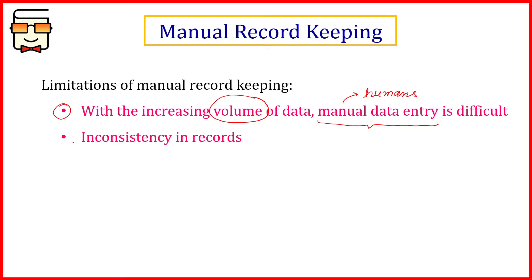Manual record keeping also leads to inconsistency in records. Inconsistency means that if a human error occurs, humans can put in or update incorrect information and that will lead to inconsistency. So if the same information is stored at two places and at one place due to human error this information was modified, then both records will not match because one has been incorrectly updated. So these records become inconsistent.